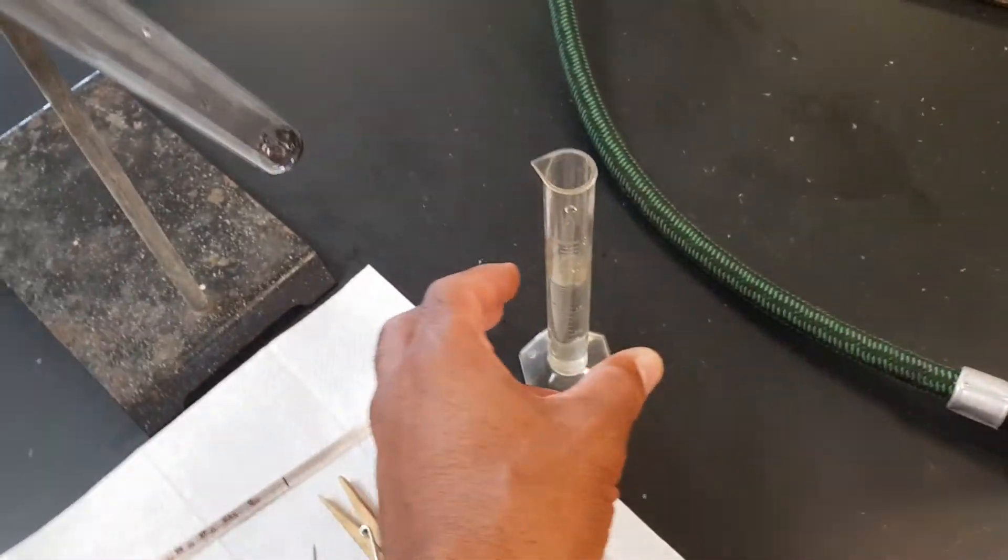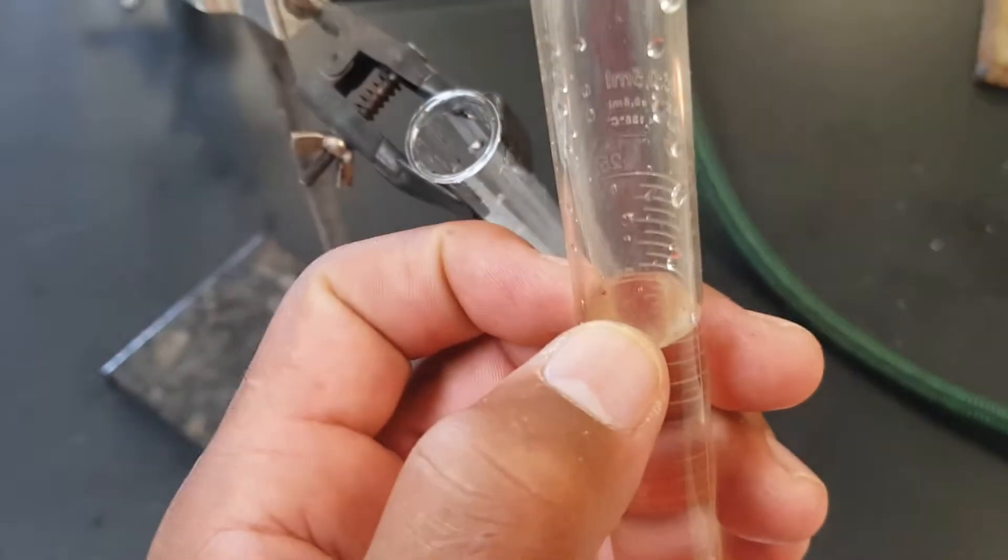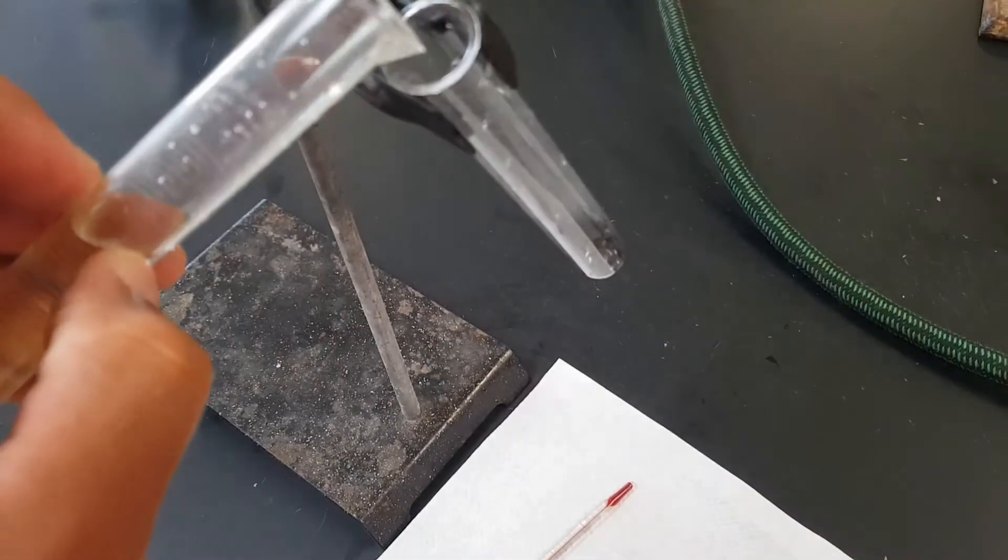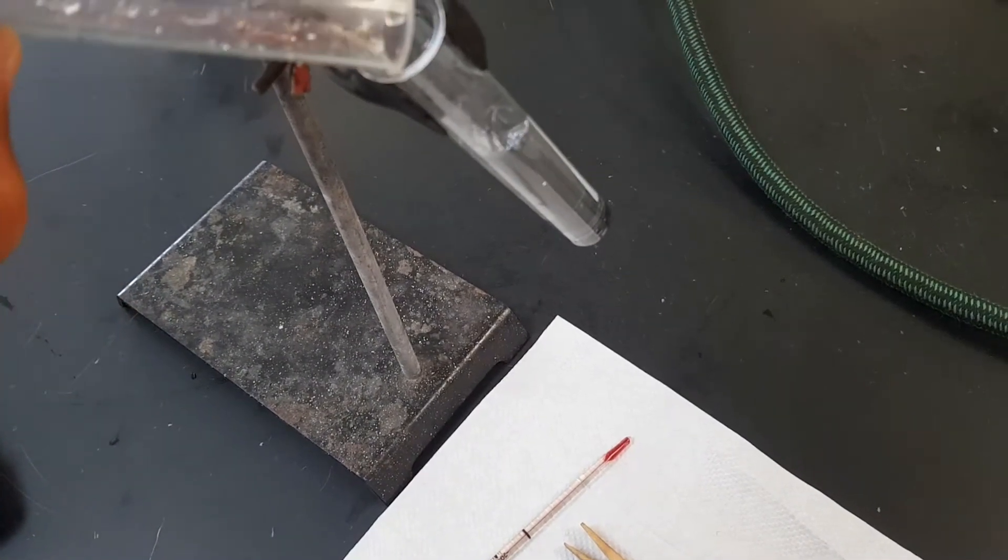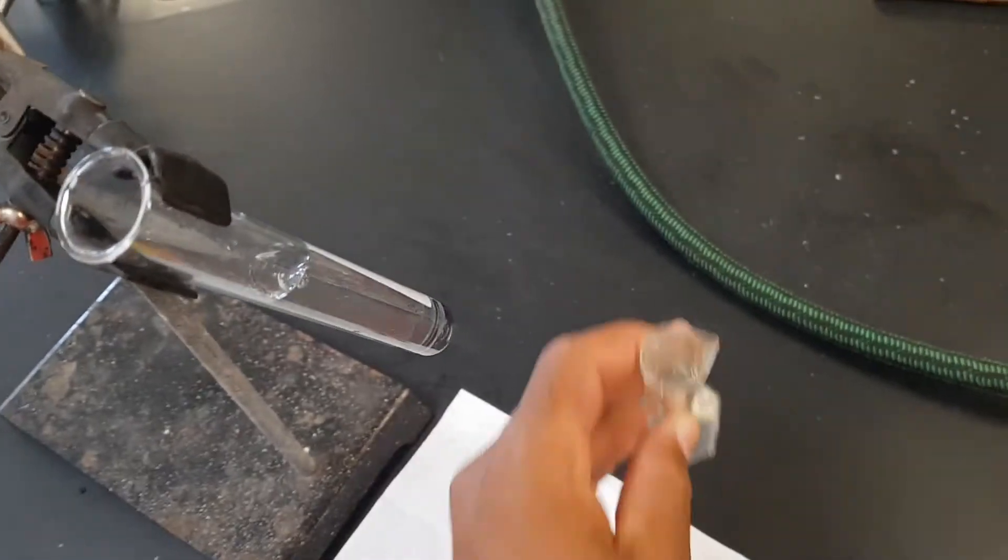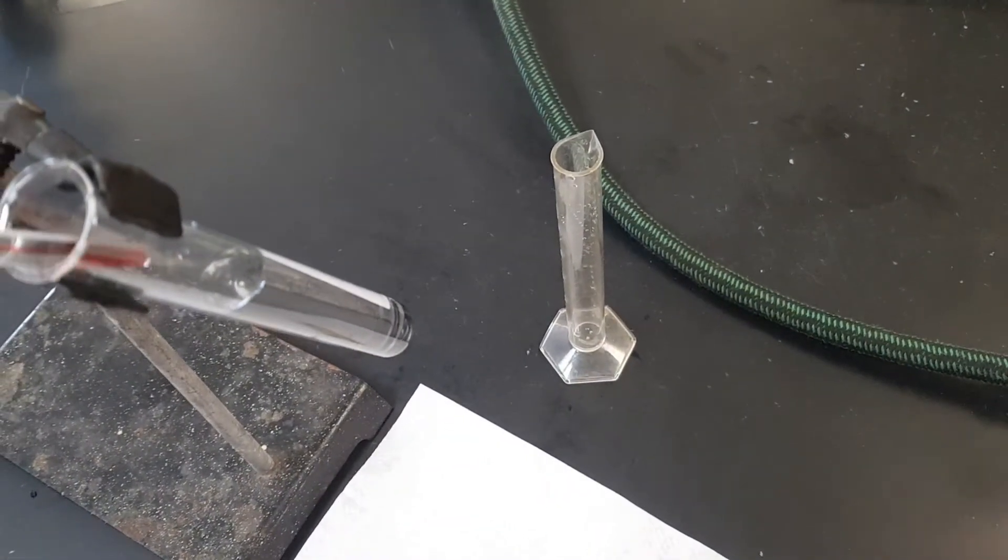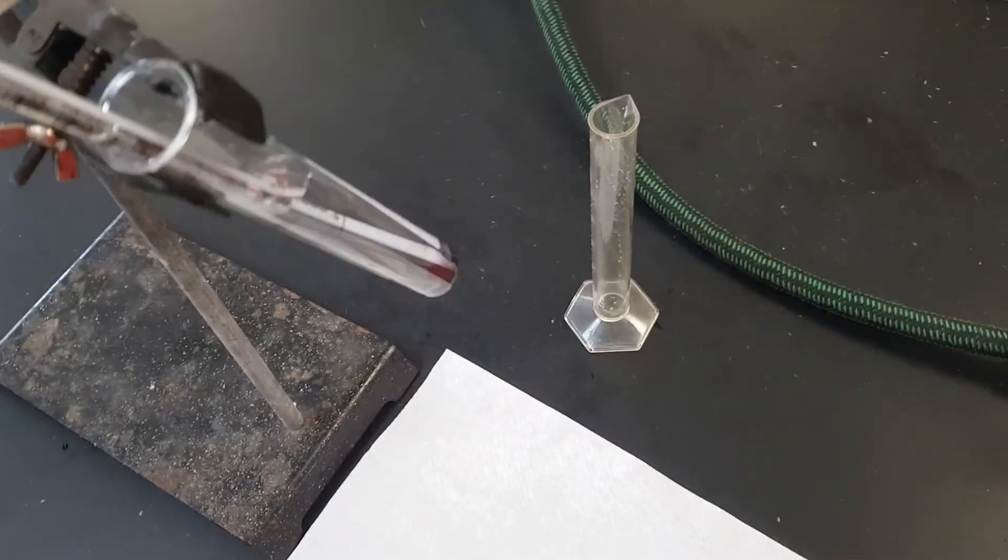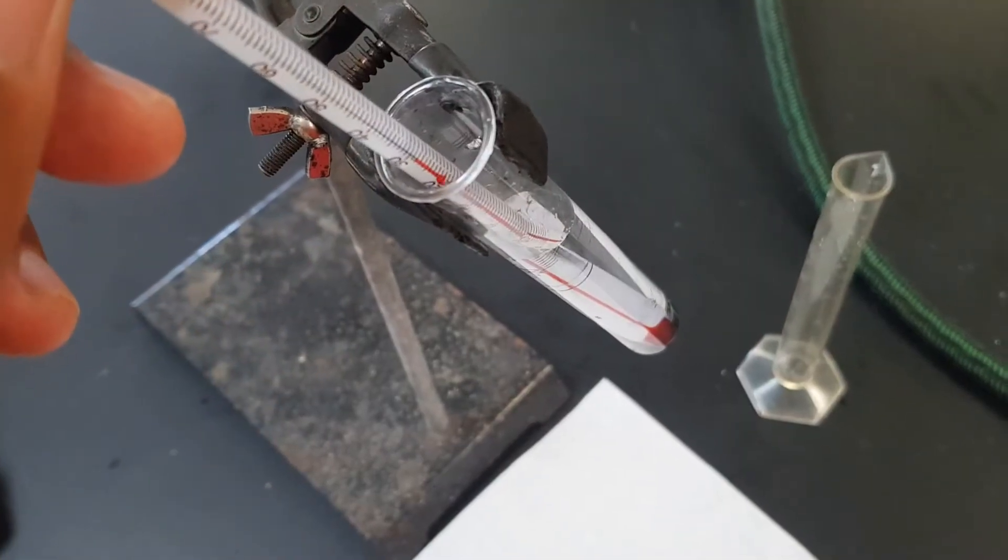So the first step you want to do is to measure water to 20 ml. This is already pre-measured so this is 20 ml. Pour the water into your test tube. Once you have done that, the next step is to take the temperature of this water. That's the initial temperature of the water. Make sure you record the initial temperature of the water.